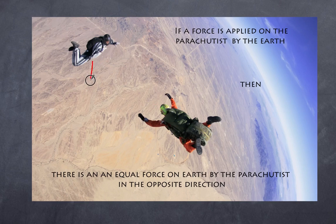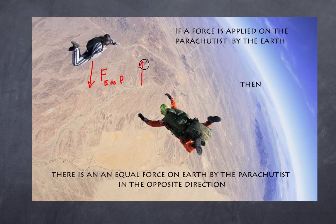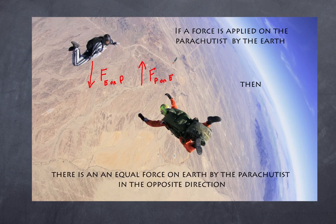Consider a parachutist. We have gravity — the force of the Earth onto the parachutist pulling them down. Newton's third law says there is an opposing force in the opposite direction: the force by the parachutist on the Earth. So yes, the parachutist applies a force onto the Earth of the same magnitude. You do have a gravitational effect on surrounding masses — you actually pull the Earth up.